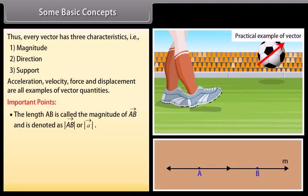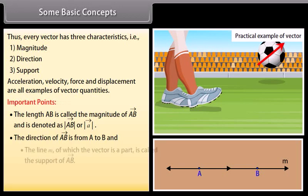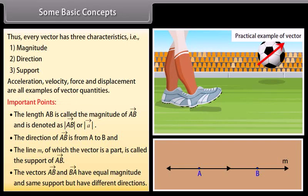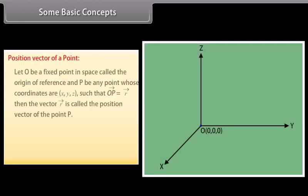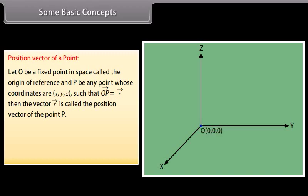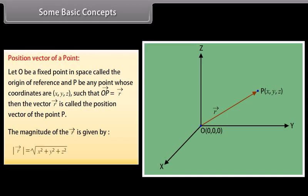The length AB is called the magnitude of vector AB, denoted as |AB| or |A|. The direction of vector AB is from A to B. The line M of which the vector is a part is called the support of vector AB. Vectors AB and BA have equal magnitude and same support but have different directions. Position vector of a point: Let O be a fixed point in space called the origin of reference and P be any point whose coordinates are X, Y, Z such that vector OP equals vector R. Then the vector R is called the position vector of the point P. The magnitude of vector R is given by |R| = √(X² + Y² + Z²).